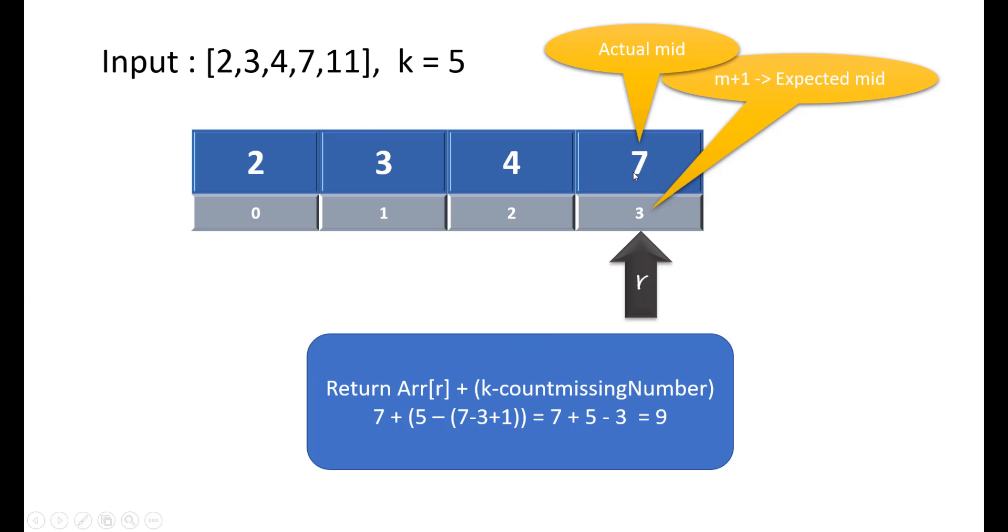So we can just consider that our array was this and find out the missing number. The missing number here would become the last element or the element at this right position plus k minus the count that is missing after this. So that gives us 7 plus 5 minus 3, that is 9, which is our expected answer.